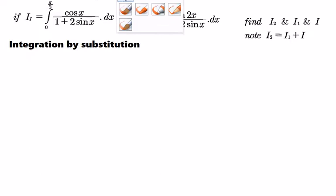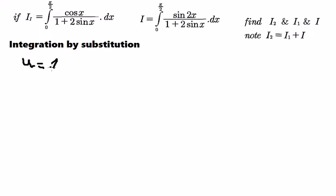So we got u equal to 1 plus 2 sine x. Later we do first derivative on both sides. Because we don't have the number 2 in here, so we divide both sides with number 2.